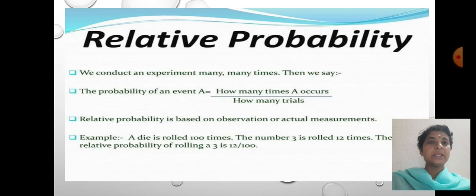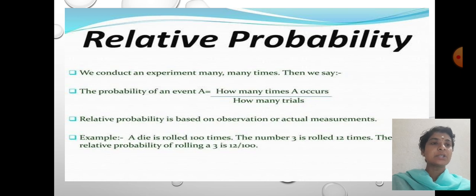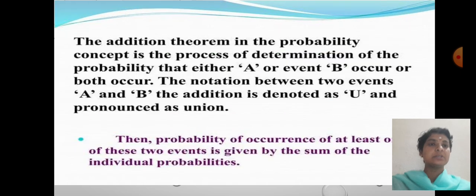Relative probability: we conduct an experiment many times, then we say the probability of an event A equals how many times A occurs divided by how many trials. Relative frequency is based on observation or actual measurement. A die is rolled 100 times, then number 3 is rolled 12 times. The relative probability of rolling a 3 is 12/100.